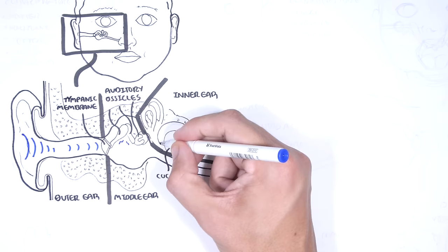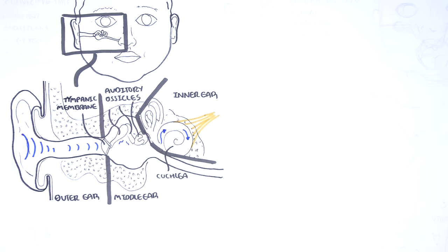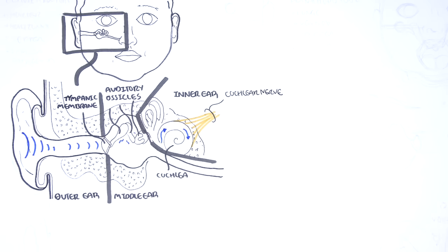The movement of the stapes causes the fluid in the cochlea to vibrate. The cochlea cells will translate this vibration information into nerve impulses and essentially send it to the brain where sound is perceived.